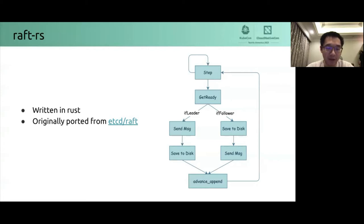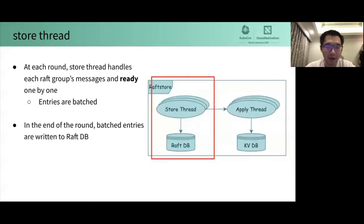Then, the store threads gets ready to handle. Ready is a data structure that includes entries to be saved to disk, the committed entry to be applied, and the message to be sent. Leader sends a message before saving entries to disk, while follower does the opposite. Finally, the store threads calls advance to end this round. At each round, store threads handles each Raft group's messages and ready one by one. The entries from this Raft are batched and then written to RaftDB together in the end of the round in order to optimize the write performance.